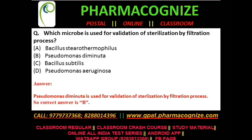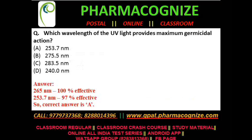Third question: which microbe is used for validation of sterilization by filtration process? Option A is Bacillus stearothermophilus, Option B is Pseudomonas diminuta, Option C is Bacillus subtilis, Option D is Pseudomonas aeruginosa. Pseudomonas diminuta is used for the validation of sterilization by filtration process, so the correct answer will be B — Pseudomonas diminuta.